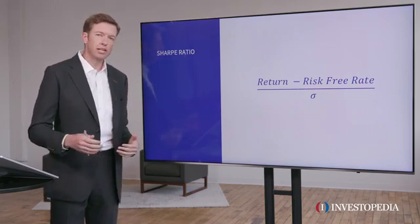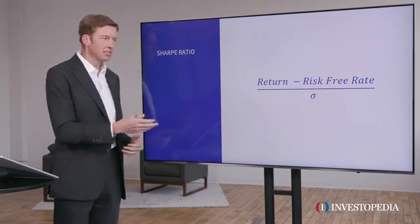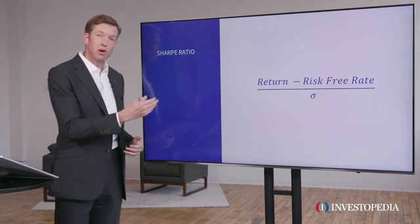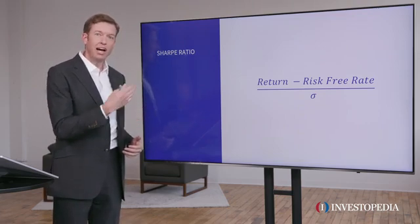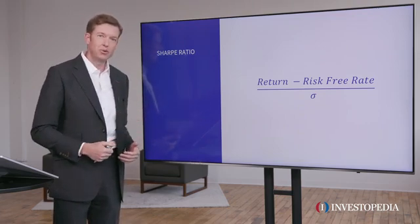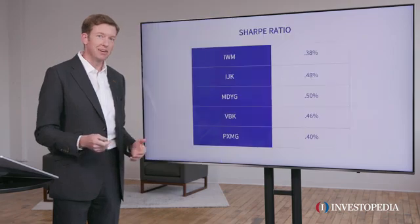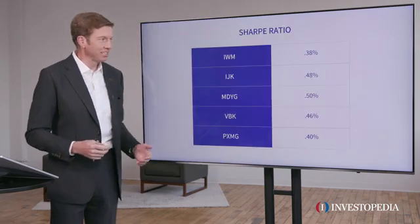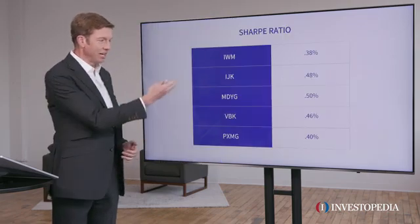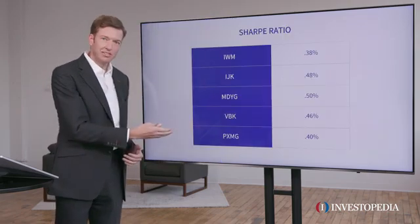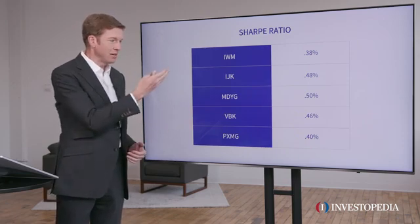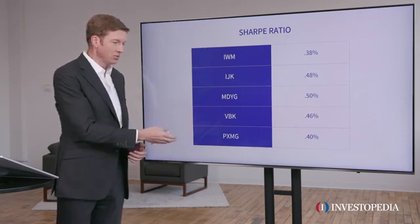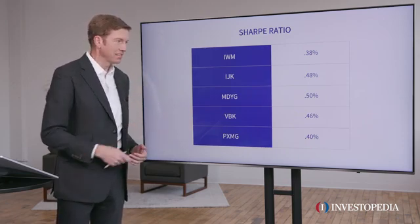What we're looking for is something that has a really small denominator compared to its numerator. So the higher the Sharpe ratio, the better. Let's look at an example. I've ranked all those ETFs that I put on the chart, starting with IWM all the way through to our leader, PXMG.